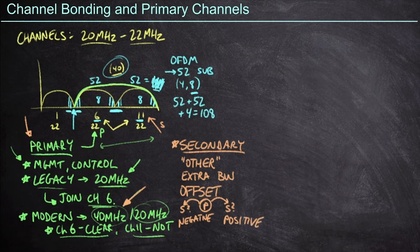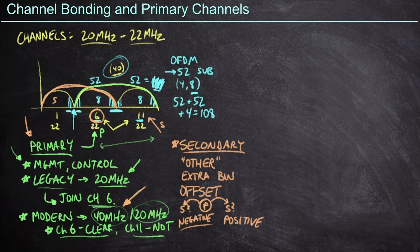If the secondary is over to the left, we call this a negative offset, and if it's to the right, we call it a positive offset. The negative offset concept kind of sounds like it's a bad thing, but it's just about which direction we go. In our example with channel 6 as the primary, if I had bonded over to the left and made channel 1 the secondary, we would have a negative offset. However, in the example of channels 6 and 11, this is a positive offset because our secondary channel is higher than our primary channel.